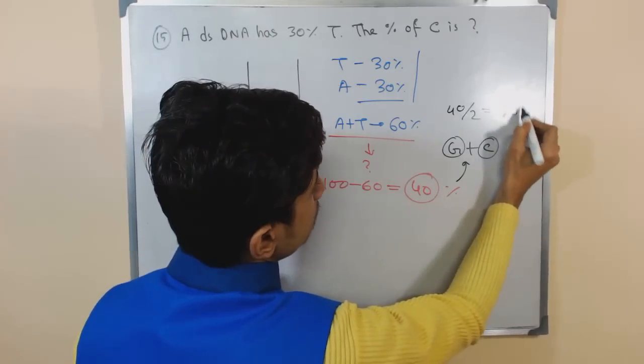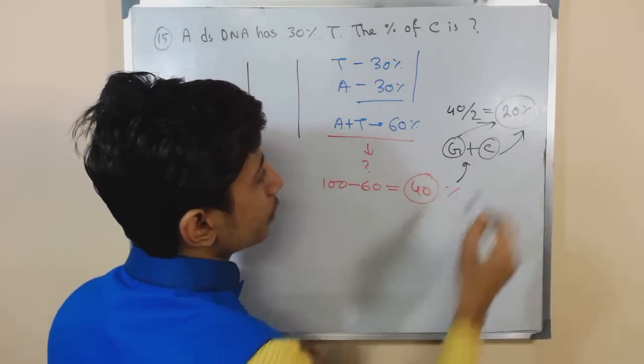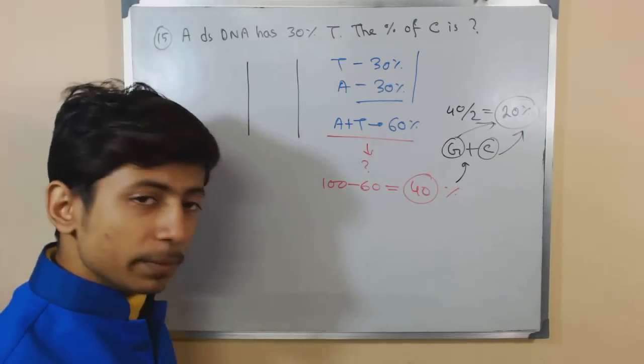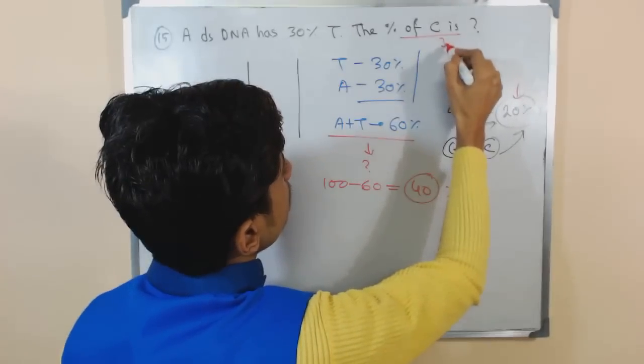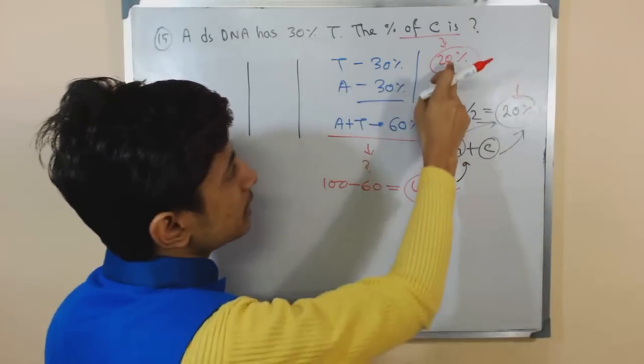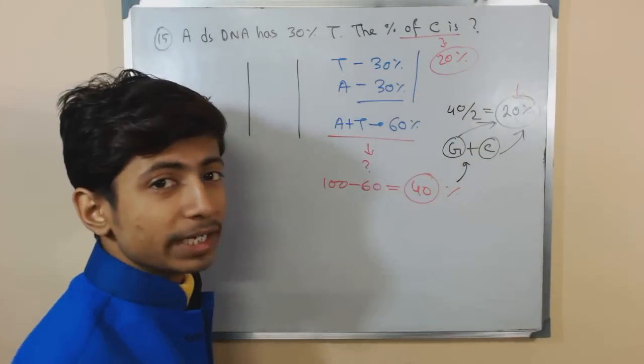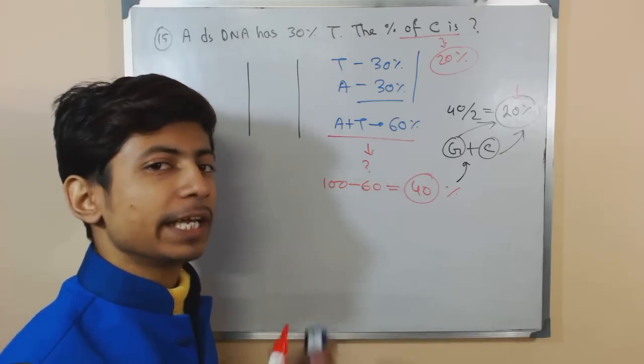It will be 20 percent. So we have 20 percent guanine and 20 percent cytosine present in this DNA. 20 percent cytosine, 20 percent guanine, 30 percent thymine, and 30 percent adenine - it completes the structure of the DNA, the 100 percent bases.